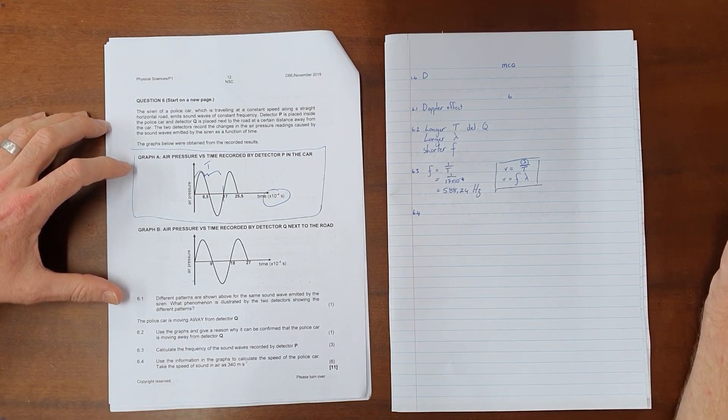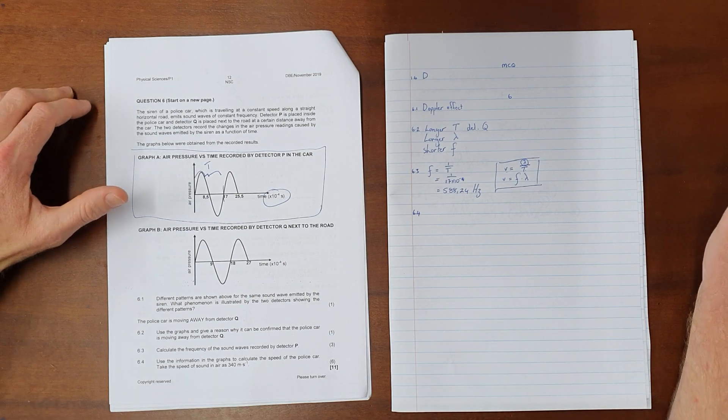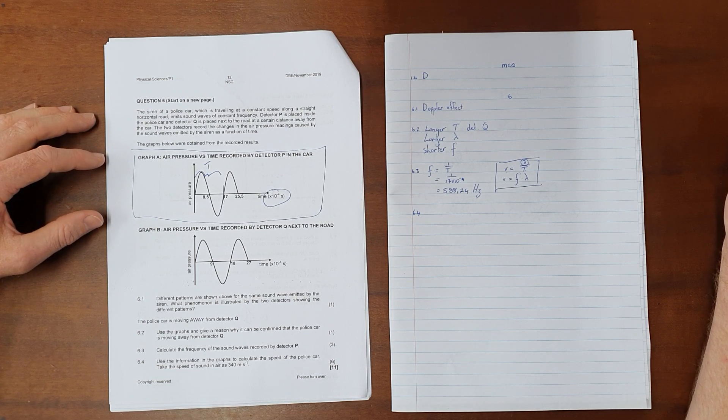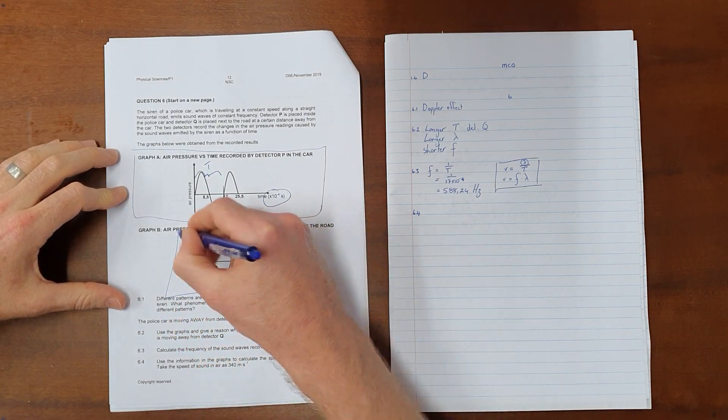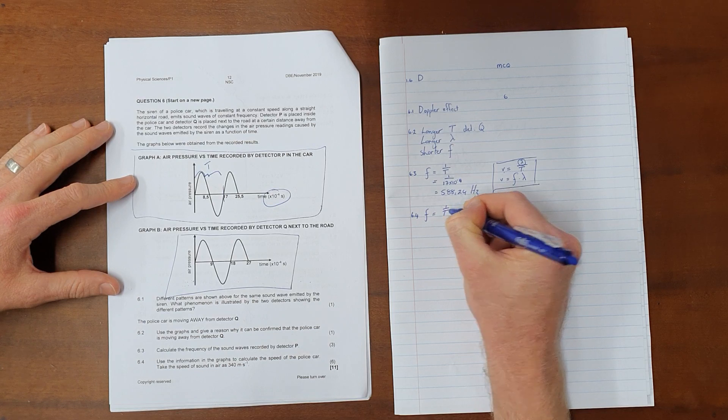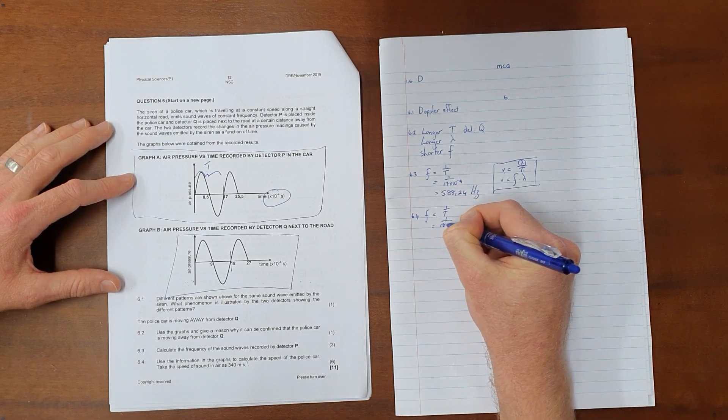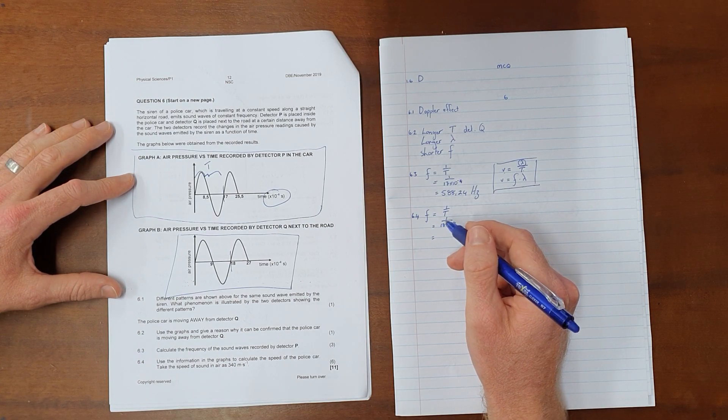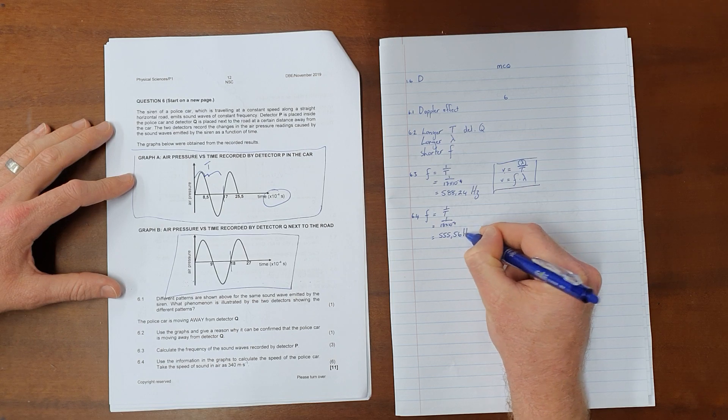Question 6.4 now states use the information in the graphs to calculate the speed of the police car. Take the speed of sound in air as 340 meters per second. We are using the Doppler effect calculation here and what we first need to do is we need to determine what the frequency that is detected is. So we would use the same calculation as we used in the above question except now we're using it for detector Q, and that once again tells us f equals 1 over the period where in this case it is now 18 times 10 to the negative 4 seconds, which then tells us that the frequency that was detected by detector Q is 555.56 Hz again rounded to two decimal places.